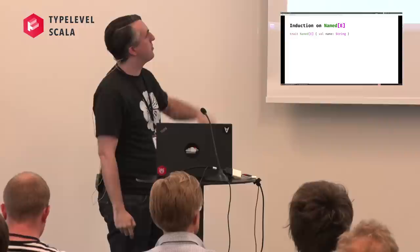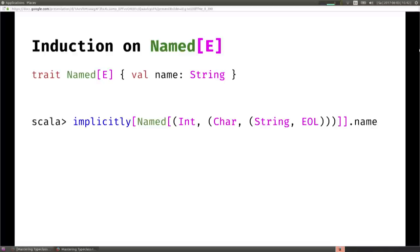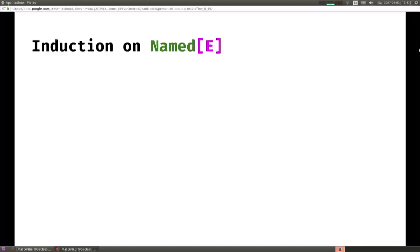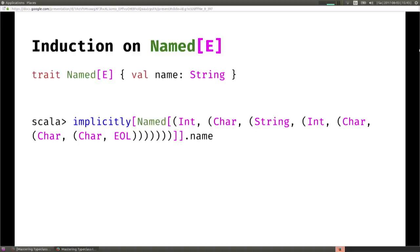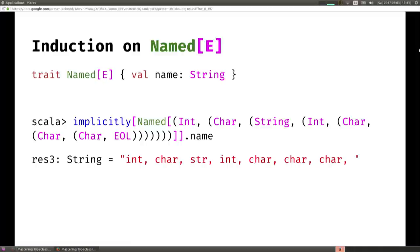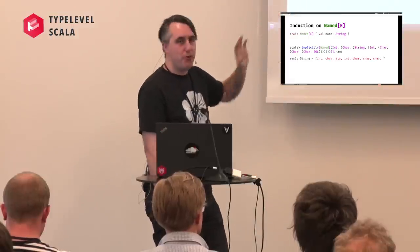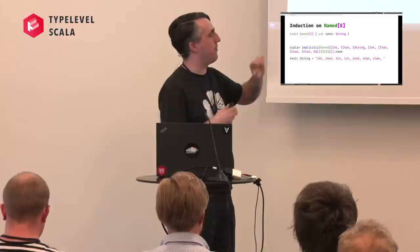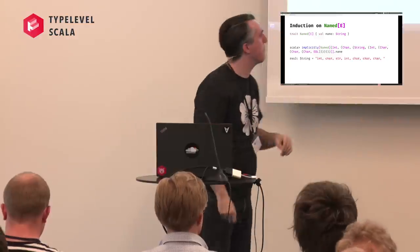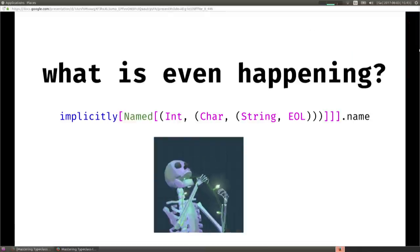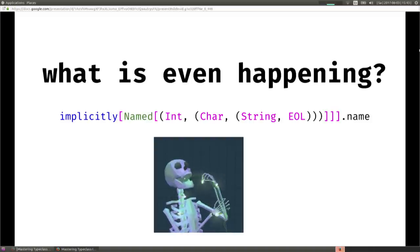If we took this to the altar and asked the gods to conjure an instance of Named for (Int, (String, EOL)) and called name on it, we'd get a string with a trailing comma. And not only that - we wrote no instance for this, it was derived. If we give it a more complex type like (Int, (Char, (String, (Int, (Char, (Char, EOL)))))), it still works with a trailing comma. So how is this all working? It's not macros, it's not horrible skeletons - it's doing exactly what our base and inductive cases tell it to do.